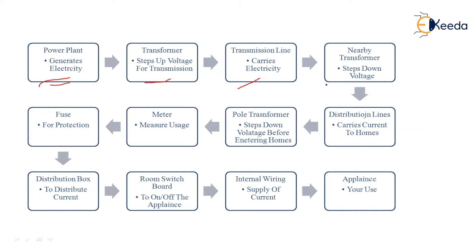From the transmission lines it goes to a nearby transformer that steps down the voltage to the required level. Then come the distribution lines — the wires which carry the current to our homes. These are the wires we can see from our streets. In urban or metro areas, distribution lines are generally underground and cannot be seen.